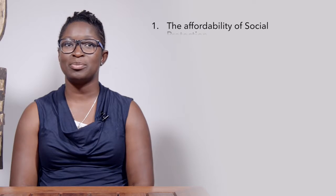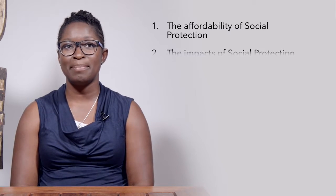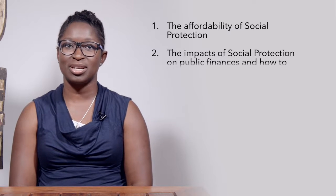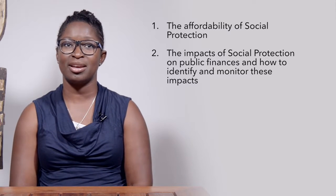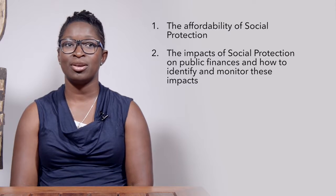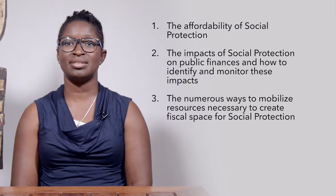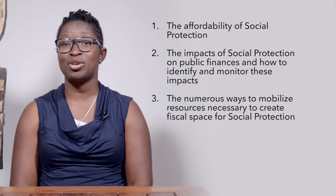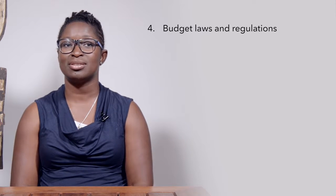The module covers six core areas. One, the affordability of social protection. Two, the impacts of social protection on public finances and how to identify and monitor these impacts. Three, the numerous ways to mobilize resources necessary to create fiscal space for social protection. Four, the budget laws and regulations.